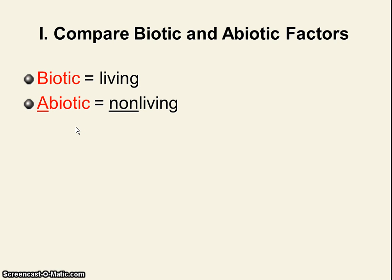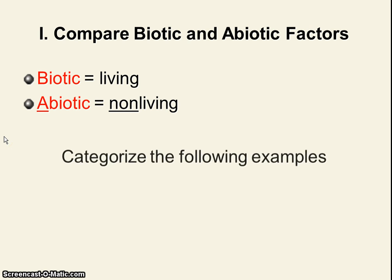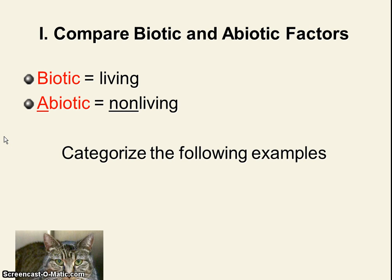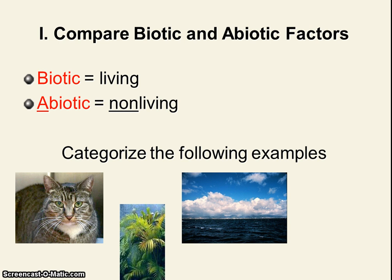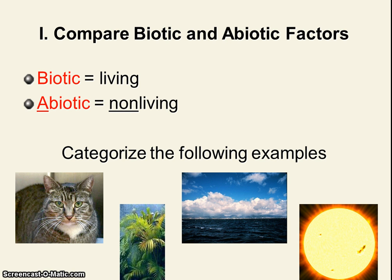Here are really two easy vocab words, but make sure they pop out by bolding, underlining, and/or highlighting them in your notes. Now here are some examples that I'm going to want you to categorize in a second: a cat, a plant, the sky or water, and the sun or sunlight. Let's put them into categories.